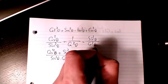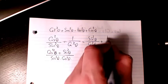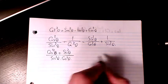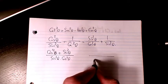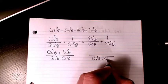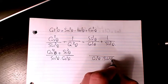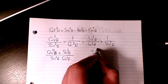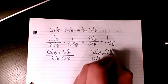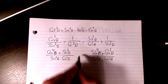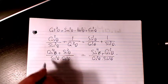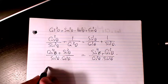On the right-hand side, I have sine squared theta divided by cosine squared theta plus 1 over sine squared theta. With common denominator cosine squared theta times sine squared theta, the numerator becomes sine to the power of 4 theta plus cosine to the power of 2 theta.